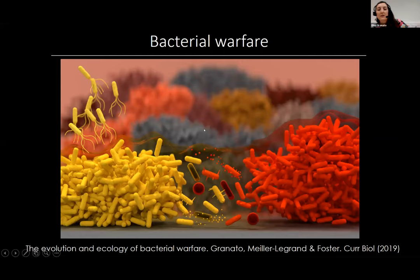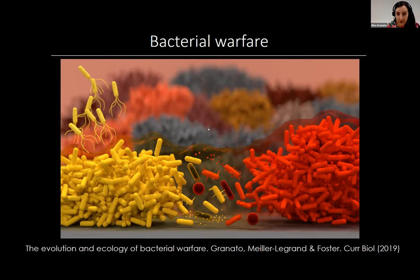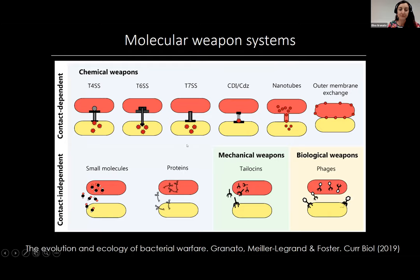As most of you probably know, bacteria in nature live in these really high density multi-genotype environments where they're pretty much constantly interacting with each other. Since there's often limited nutrients and limited space in these environments, there's really strong selection pressure to be a good competitor. One way of being a good competitor is finding a way to kill or inhibit your competitors, and many bacteria have evolved different molecular weapon systems to do just that.